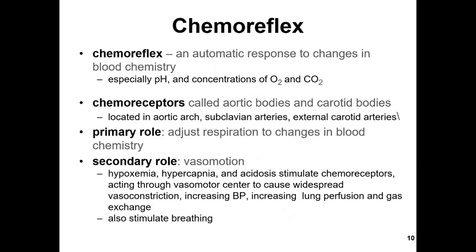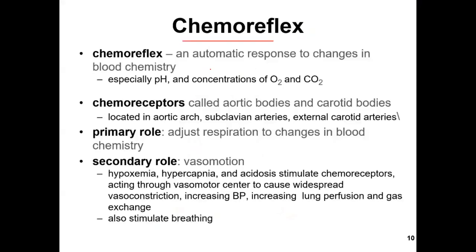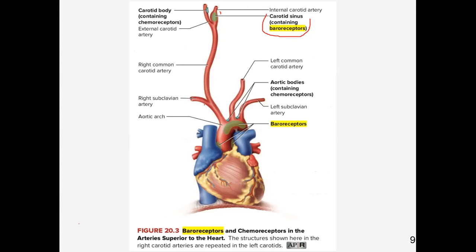Next: the chemoreflex. It is an automatic response to changes of blood chemistry — pH, oxygen, and CO2. We discussed it in the previous lecture. It activates through the carotid body and aortic bodies. The carotid body is located in the external carotid artery.